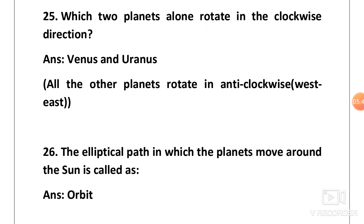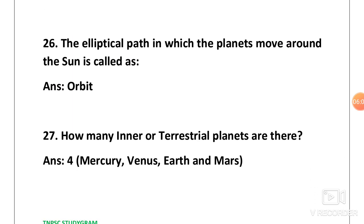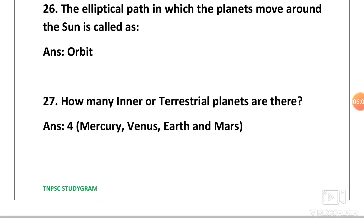Next one, which 2 planets alone rotate in the clockwise direction? Which means all other 6 planets rotate in the anticlockwise direction. The only 2 planets rotating in the clockwise direction are Venus and Uranus. You can remember this as UV. Anticlockwise direction is rotating in the direction from west to east. Remember this, that is very important question.